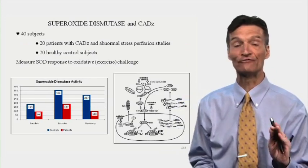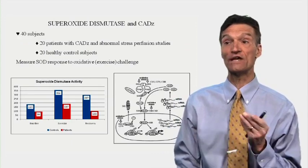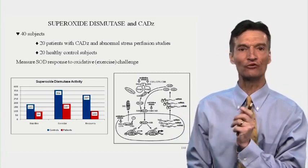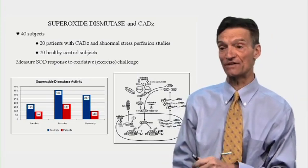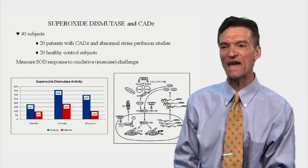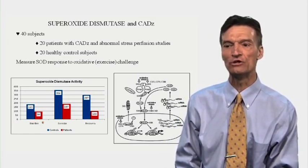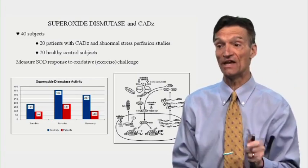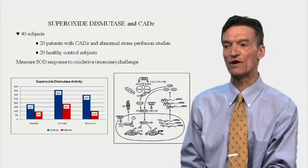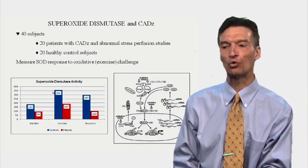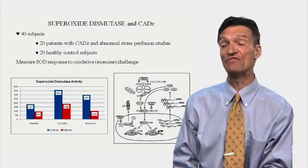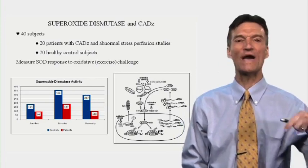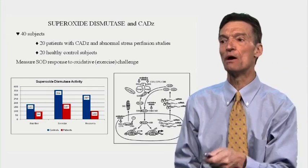We're going to take 40 subjects — 20 patients with coronary disease and abnormal stress studies, 20 healthy controls — and measure superoxide dismutase following a brief oxidative challenge: running on a treadmill. At baseline, the patients had less superoxide dismutase — that's why they were patients; they couldn't prevent oxidative stress within the arterial wall. With exercise, there's some Nrf2 translocation, but the antioxidant rebound is much greater in the healthy people. The antioxidant rebound is lost quickly in the patients but maintained in healthy people. This is why exercise is good for you: it promotes your antioxidant defense systems by translocating Nrf2. Coronary patients have a weak Nrf2 pathway due to poor nutrition and long-standing oxidative stress.